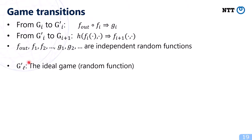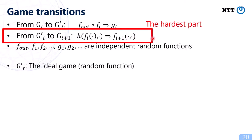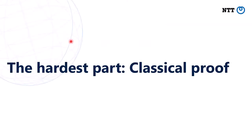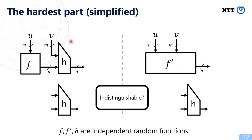The final game is the ideal game where the construction oracle is a random function. And this is the hardest part in our proof — proving the indistinguishability between adjacent games.